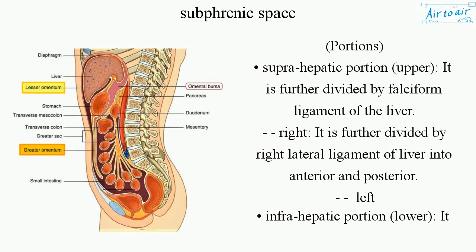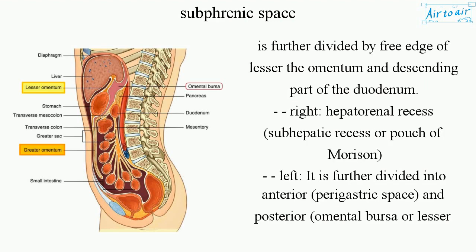The Subphrenic Space has two main portions. The Suprahepatic (upper) portion is further divided by the falciform ligament of the liver into right and left, and the right is further divided by the right lateral ligament of the liver into anterior and posterior. The Infrahepatic (lower) portion is further divided by the free edge of the lesser omentum and descending part of the duodenum into right — the Hepatorenal recess, also called the Subhepatic recess or Pouch of Morrison — and left.